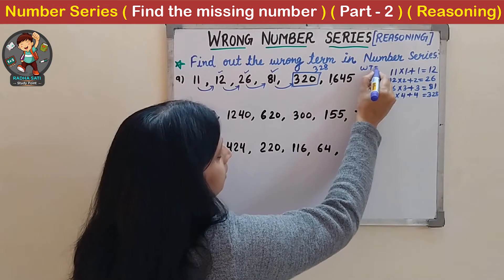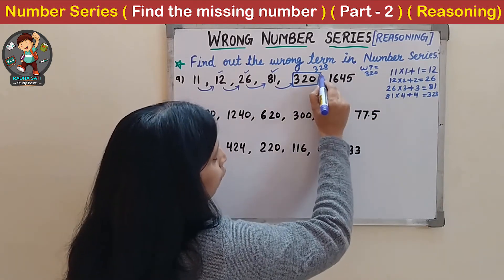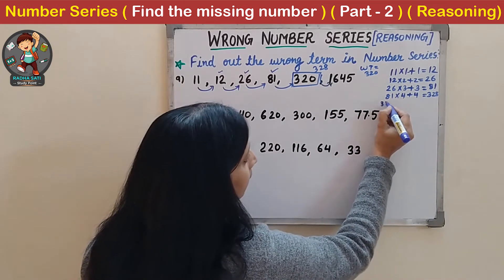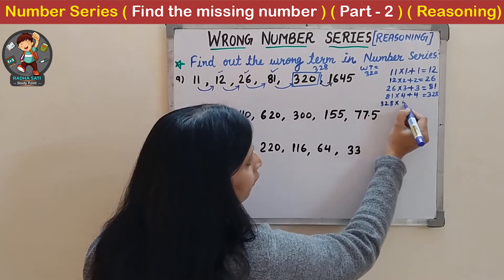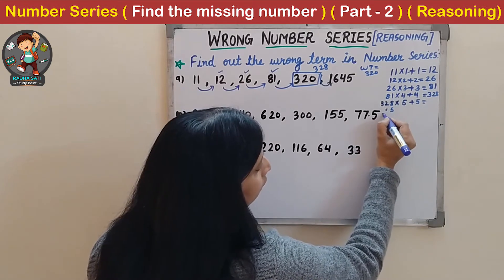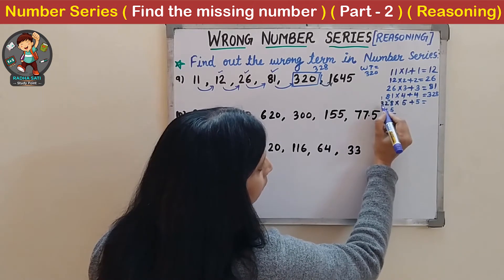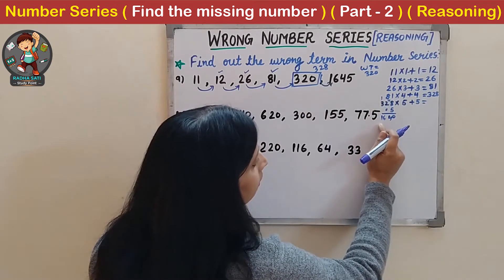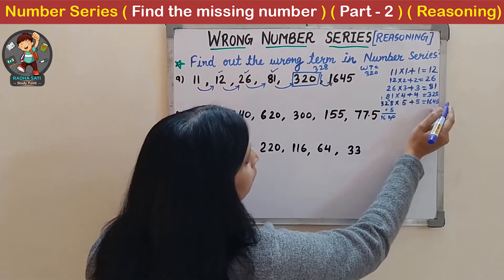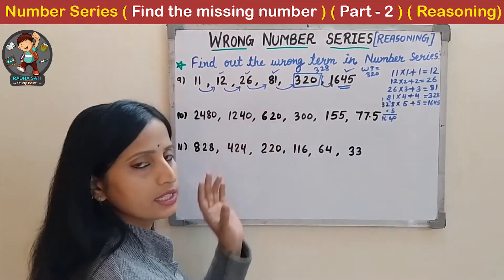Let us check that whether the pattern continues: 328 × 5 + 5 = 1,640 + 5 = 1,645, which is exactly the next term. So our answer is correct - the wrong term is 320 and it should be 328.